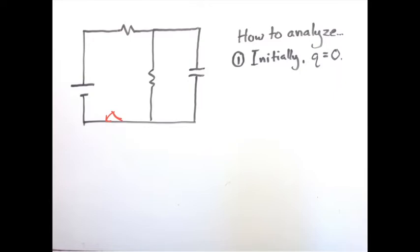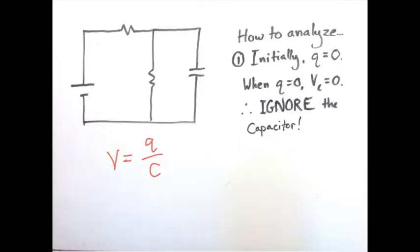Charge will, of course, begin to accumulate on the capacitor, but at the very moment that the switch is closed, it is probably zero. And since the volts on the capacitor are charge divided by capacitance, if the initial charge is zero, then the capacitor uses no volts. In other words, what you can do is basically act as though the capacitor is not there.